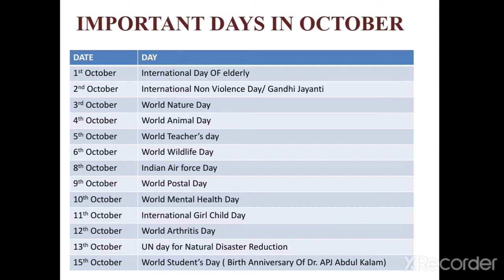Important days in October: 1st of October is International Day of Elderly. 2nd of October is International Nonviolence Day, on the birth anniversary of Gandhiji, and it is also Gandhi Jayanti. 3rd of October is World Nature Day. 4th of October is World Animal Day. 5th of October is World Teacher's Day — this also came in the previous year exam, November 2020. 6th of October is World Wildlife Day. 8th of October is Indian Air Force Day.